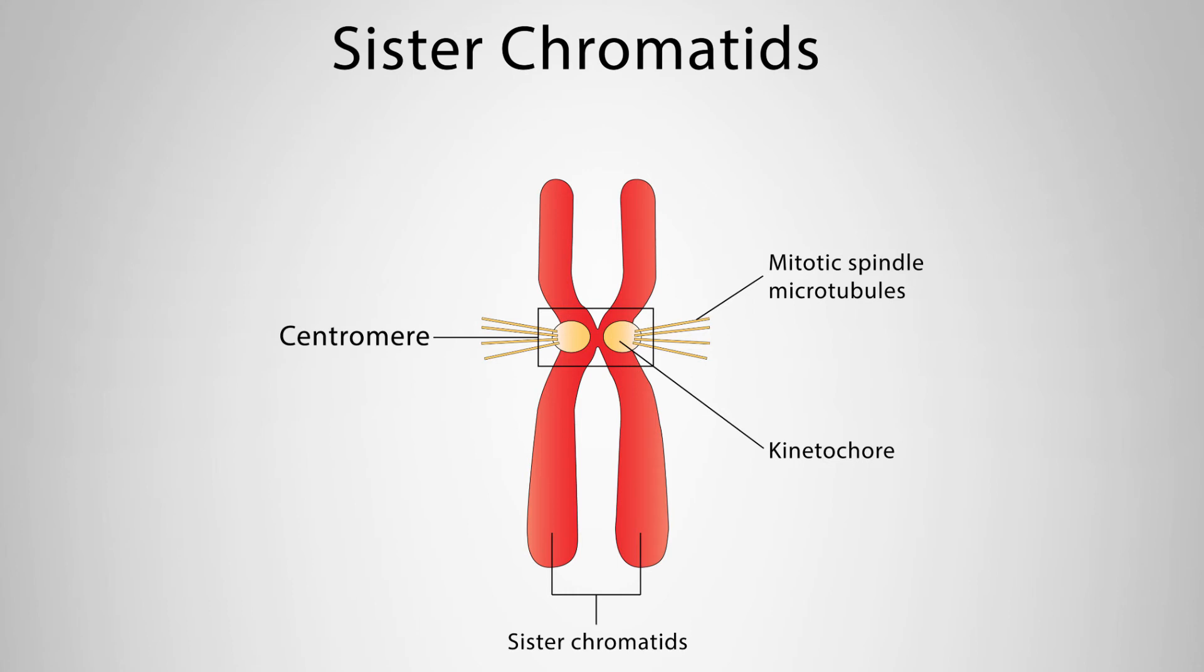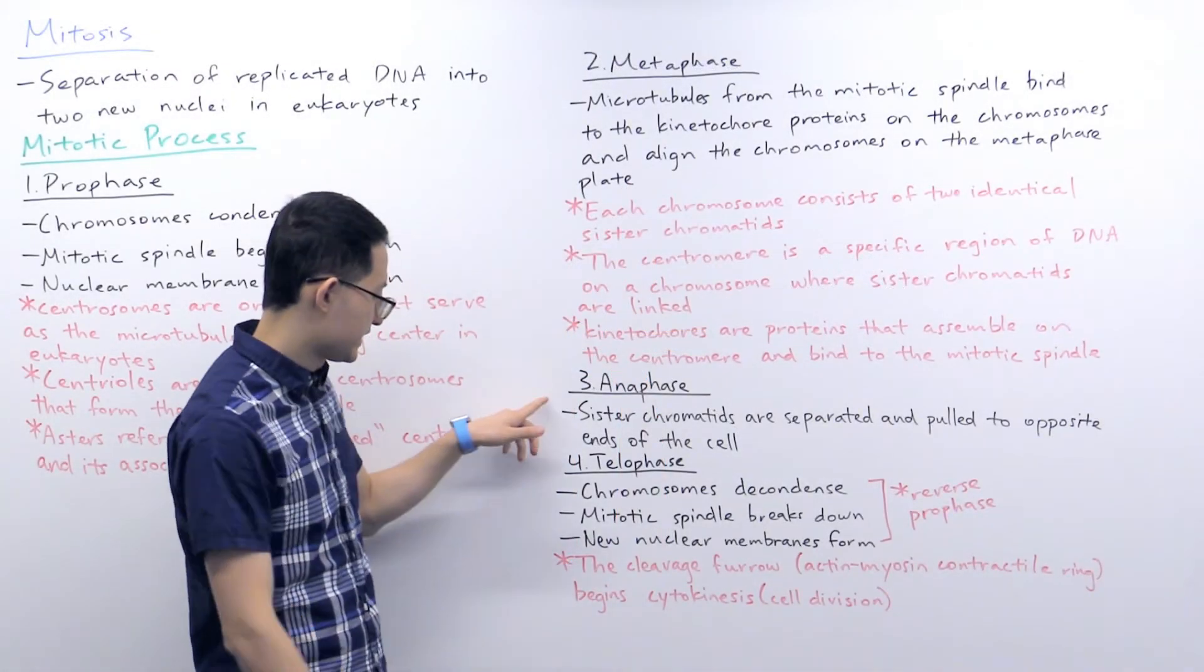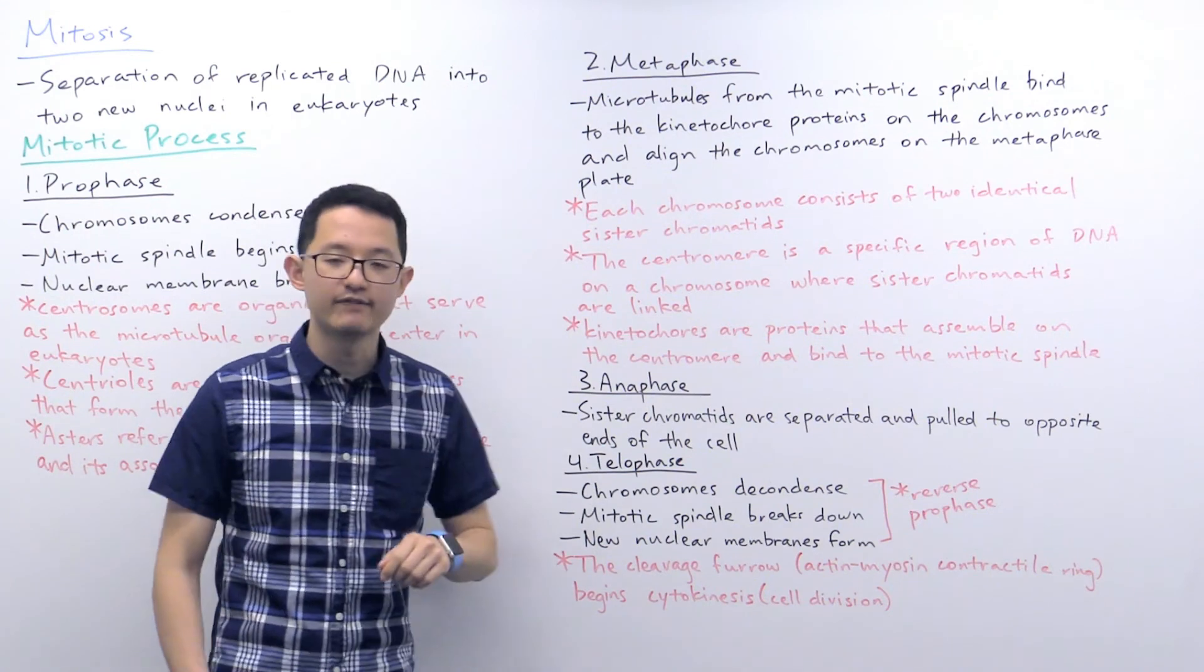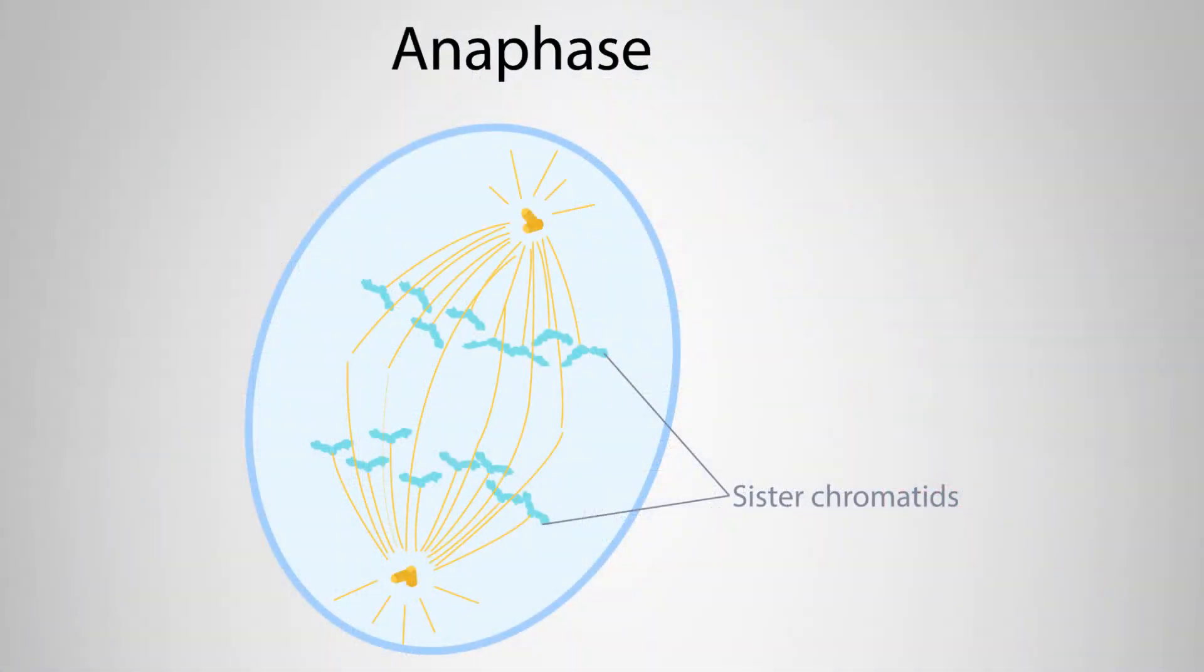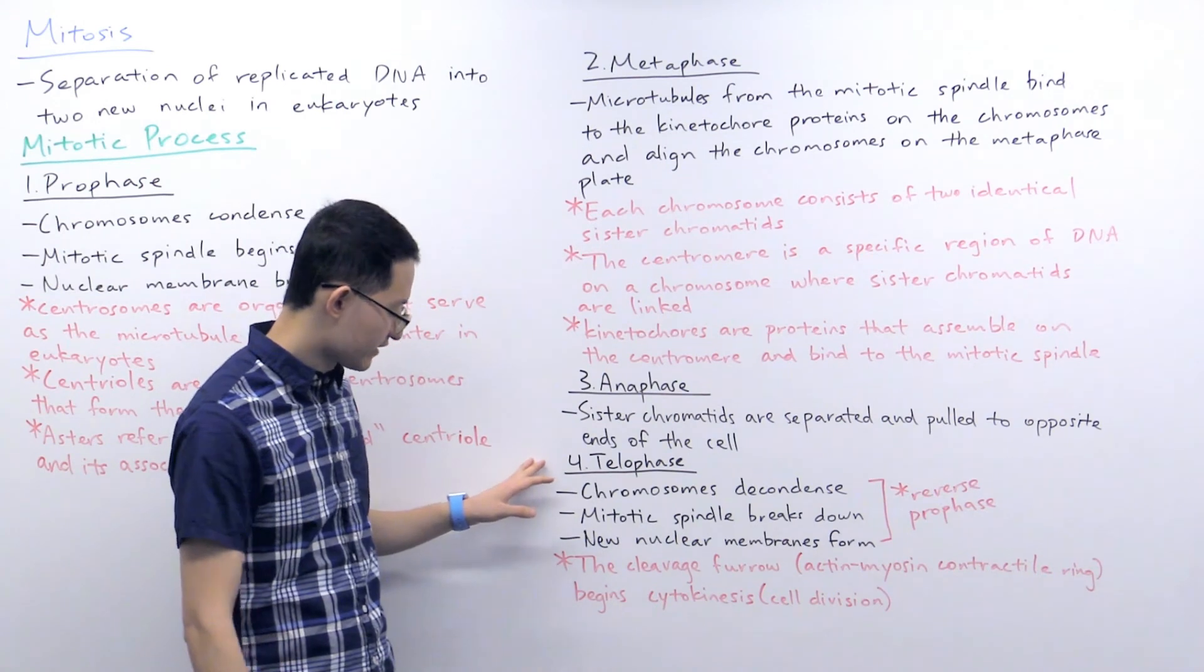Next we have anaphase. In anaphase, you can see in this diagram, this is when the sister chromatids are separated from each other and pulled to opposite ends of the cell.